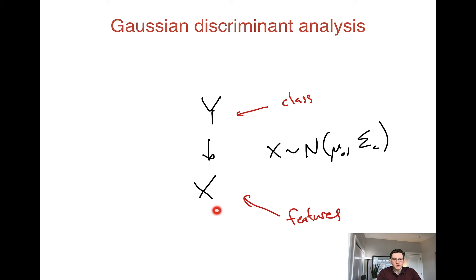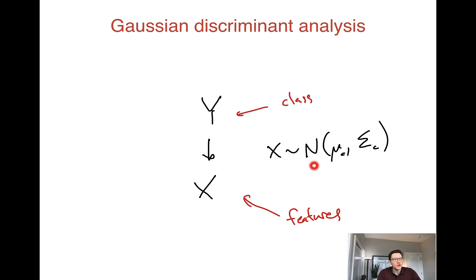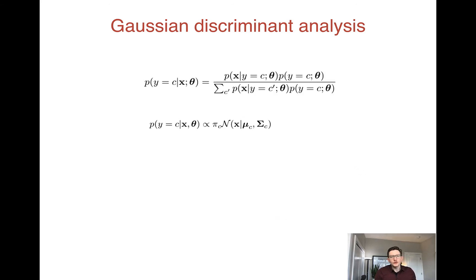Note that this is very similar to a naive Bayes model if we use a diagonal covariance matrix. A diagonal covariance matrix says that each feature in the normal distribution is independent, so a diagonal covariance matrix is equivalent to the naive Bayes assumption. But if we don't have a diagonal covariance matrix, we get a Gaussian Discriminant Analysis model which allows for dependence among features.